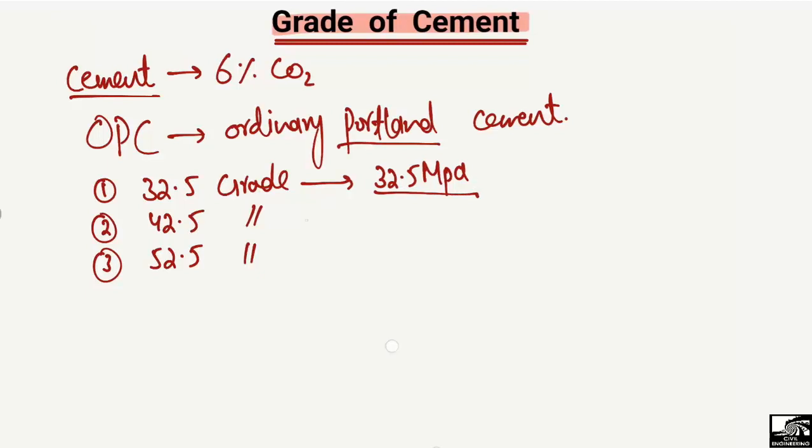If it achieves a compressive strength of 42.5 megapascals, we call it 42.5 grade cement. Similarly, if it achieves a compressive strength of 52.5 megapascals or Newtons per square millimeter, we call it 52.5 grade cement.